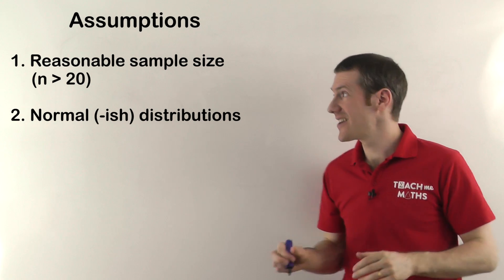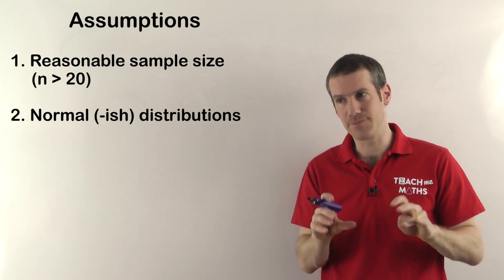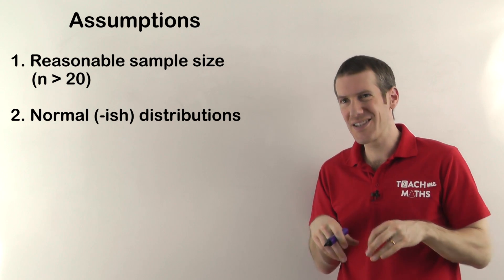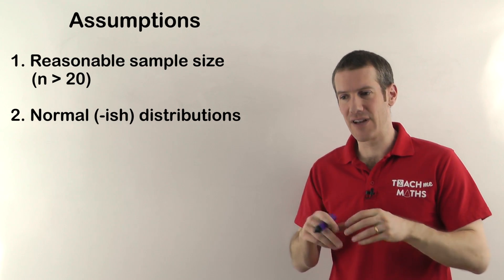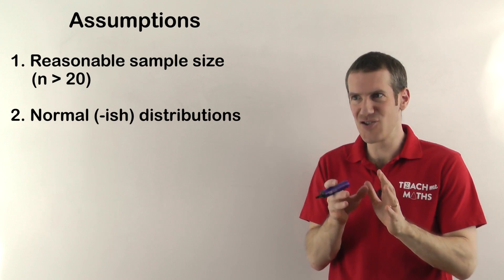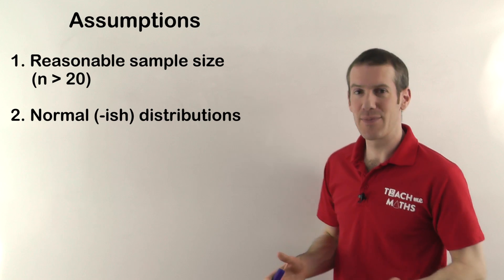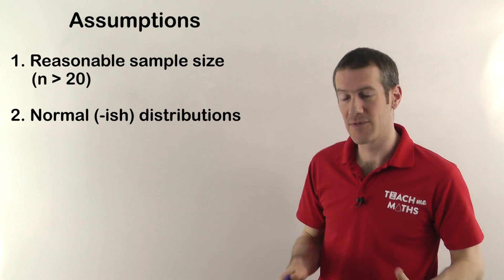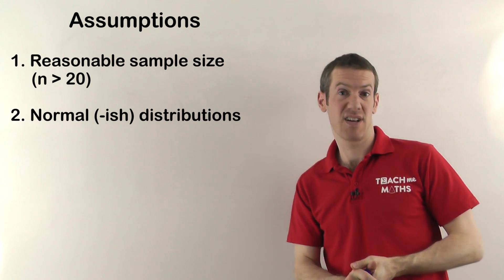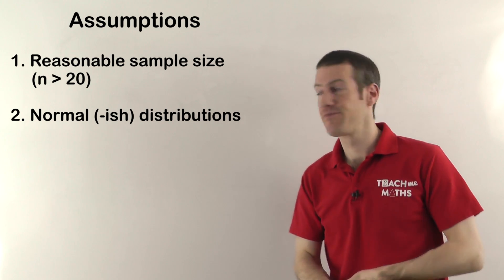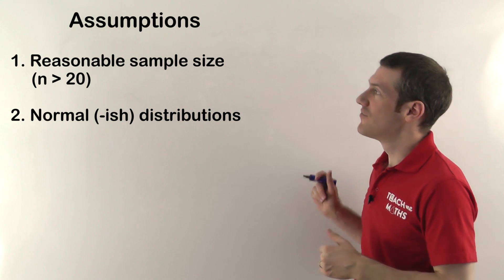Secondly, you need approximately normal distributions. The normal distribution gives you a nice bell curve. They don't have to be perfect normal distributions, but the two samples should be approximately normal. The less normal they become, the less reliable your results will be, so if they're about normal then it's fine.